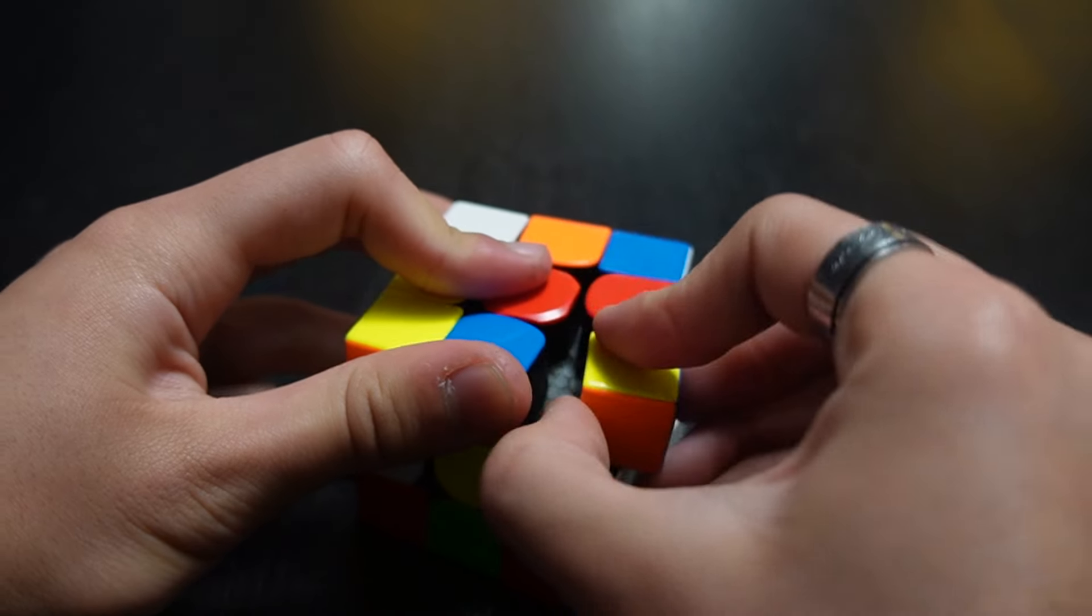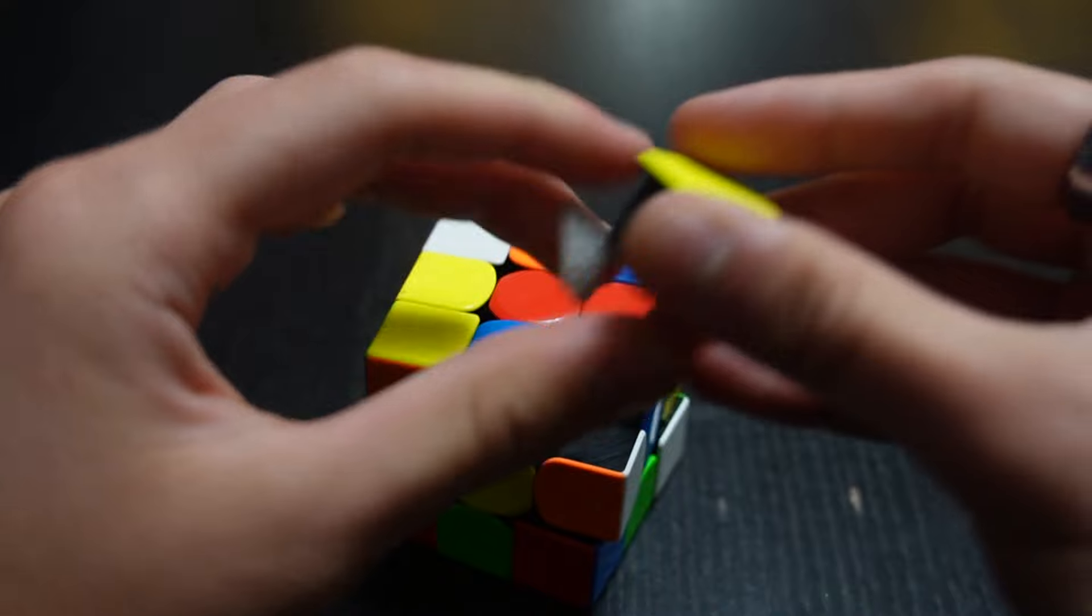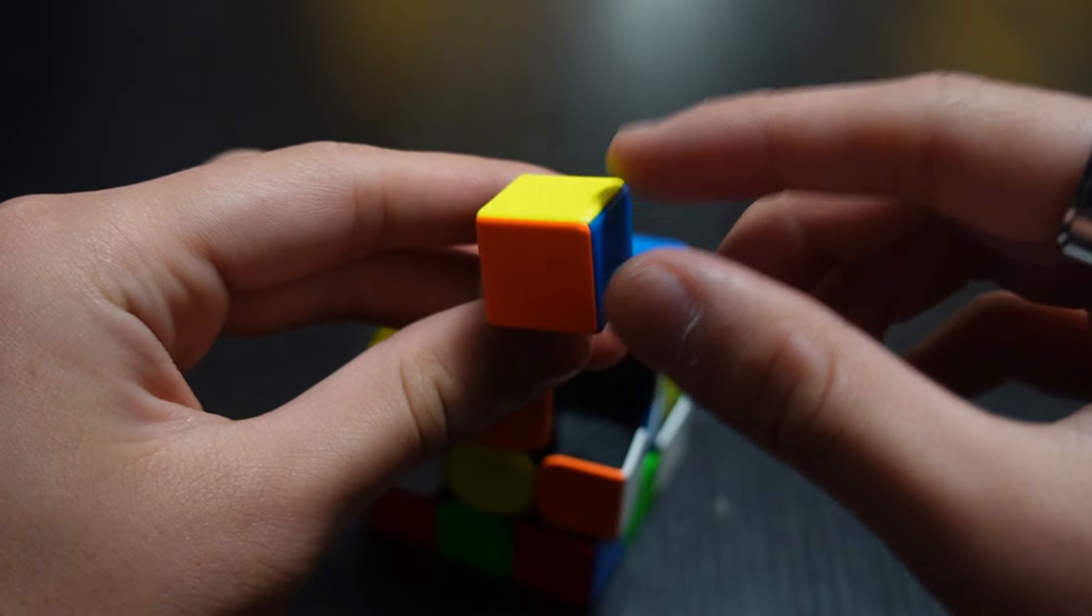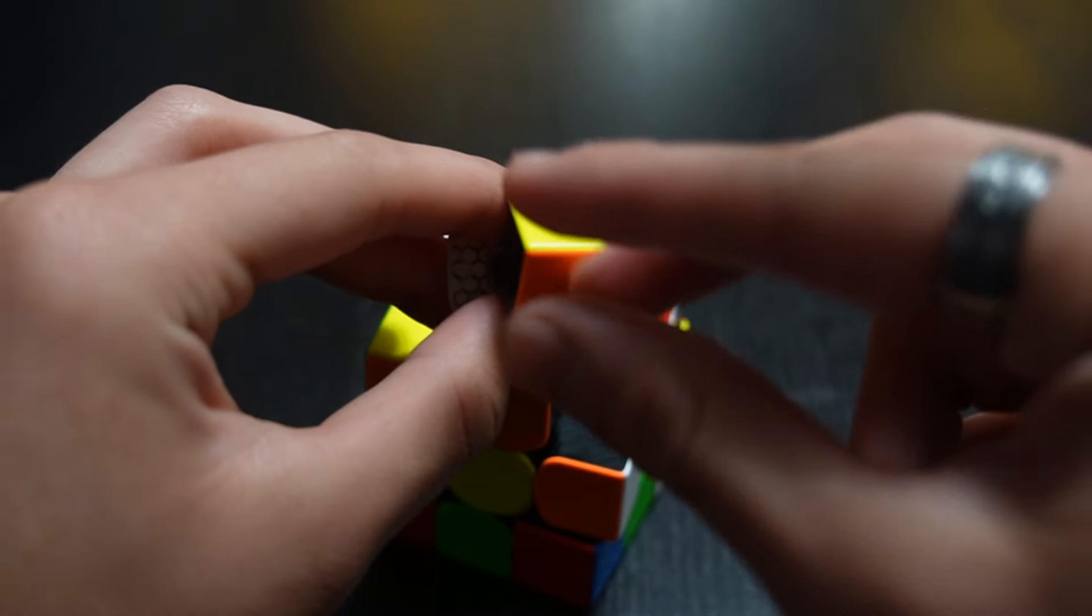Next up is a corner. The corners have three colors on them, meaning you use three fingers to pinch a corner piece like this.